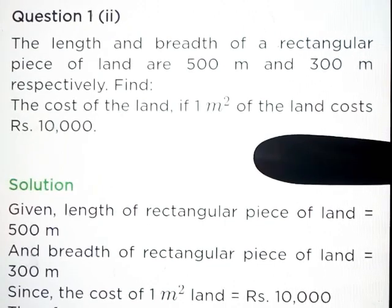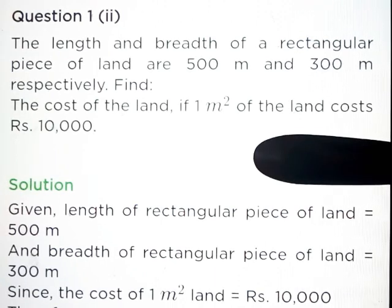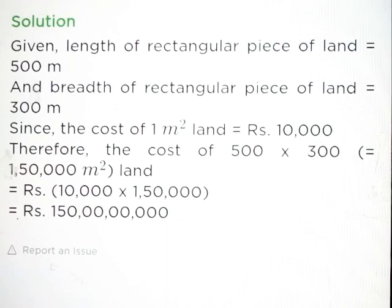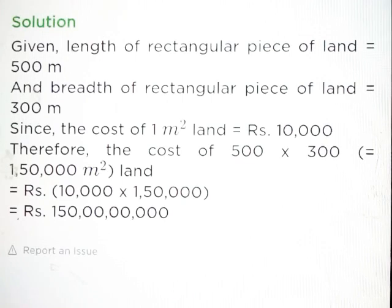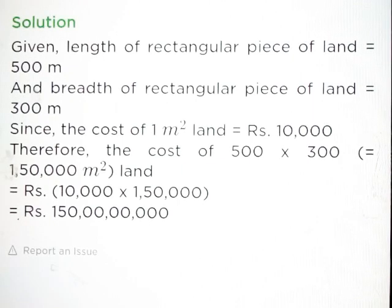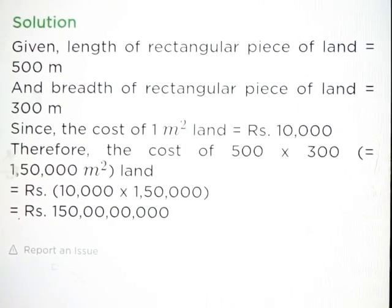Part B. The cost of 1 meter square land is equal to Rs. 10,000. Find the cost of the total land. Given: length is 500 meter and breadth is 300 meter. Since the cost of 1 meter square land is Rs. 10,000, therefore the cost of 1,50,000 meter square land is Rs. 10,000 into 1,50,000, which is equal to Rs. 1,50,00,00,000.